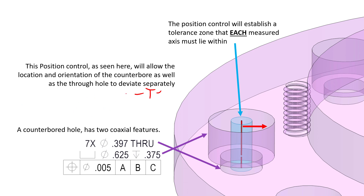But more often than not, the scenario that you see right here is more than enough for most designs. However, if you want to control other diameters that happen to be nominally coaxial to other features, you would use different feature control frames to control their position tighter or looser. So we can see the axis of our counterbore diameter and the axis of our through hole diameter can deviate separately, but with this scenario here we're guaranteeing that at most they will always be within five thousandths of each other diametrically.